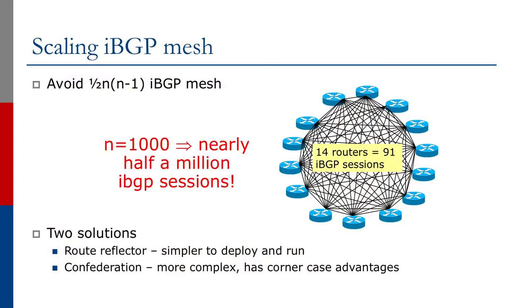We will now take a look at route reflectors. One of the issues we talked about earlier is how to scale the IBGP mesh. According to the specification, IBGP needs to be fully meshed. For example, if we have 14 routers we have 91 IBGP sessions; if we have a thousand routers we have just short of half a million IBGP sessions.